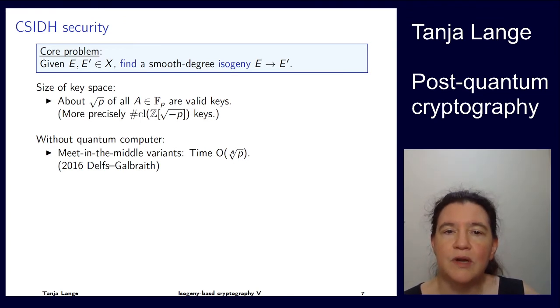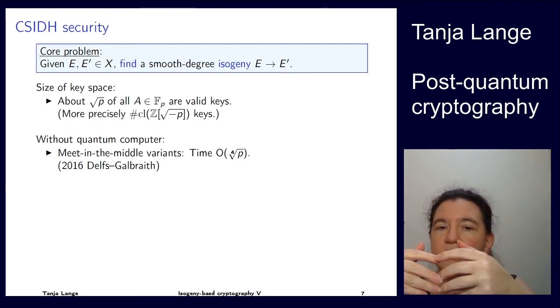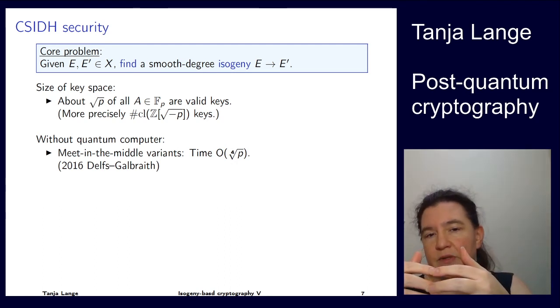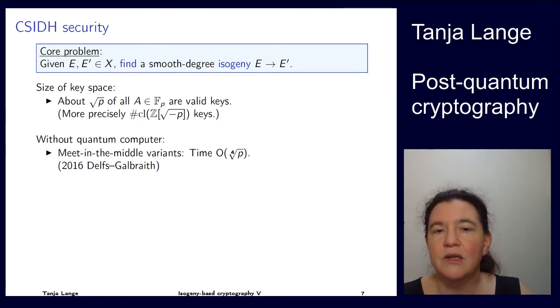You can do a walk starting from E and from E' trying to do a meet-in-the-middle, like a baby-step giant-step that you know from a normal cryptology course. If the group has square root of p elements, you're getting an extra square root speedup, so you're getting a fourth root of p. This is from the paper by van Oorschot and Wiener from 2016.